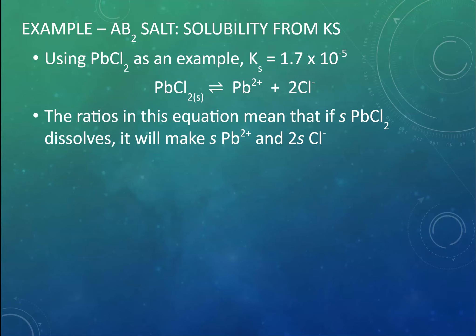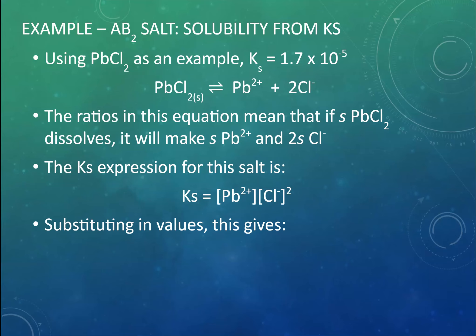So if S amount of lead chloride dissolves, then we're going to get S amount of Pb²⁺ ions and 2S amount of Cl⁻ ions. We've got our equilibrium constant expression, Ks is Pb²⁺ times Cl⁻ squared. Substituting in our S's and 2S's and our value for Ks, we've got 1.7 × 10⁻⁵ equals 4S³.